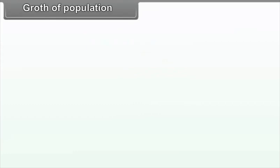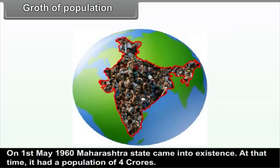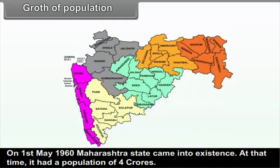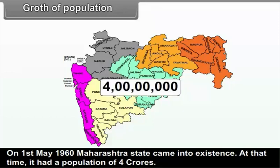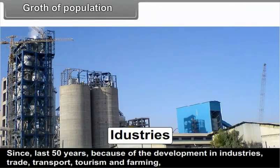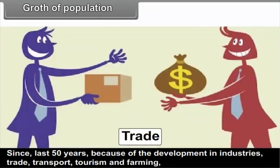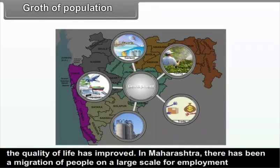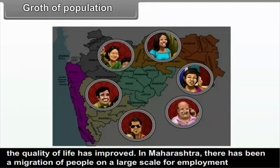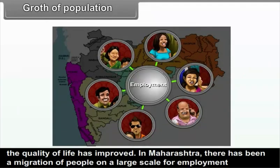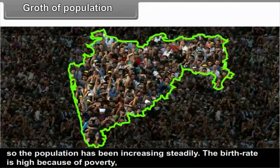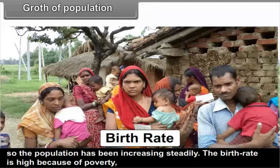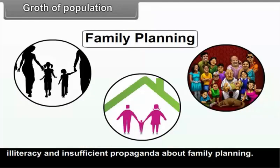7.1 Growth of Population. On 1st May 1960, Maharashtra state came into existence with a population of 4 crores. Over the last 50 years, due to development in industries, trade, transport, tourism, and farming, the quality of life has improved. There has been large-scale migration of people for employment, so the population has been increasing steadily.